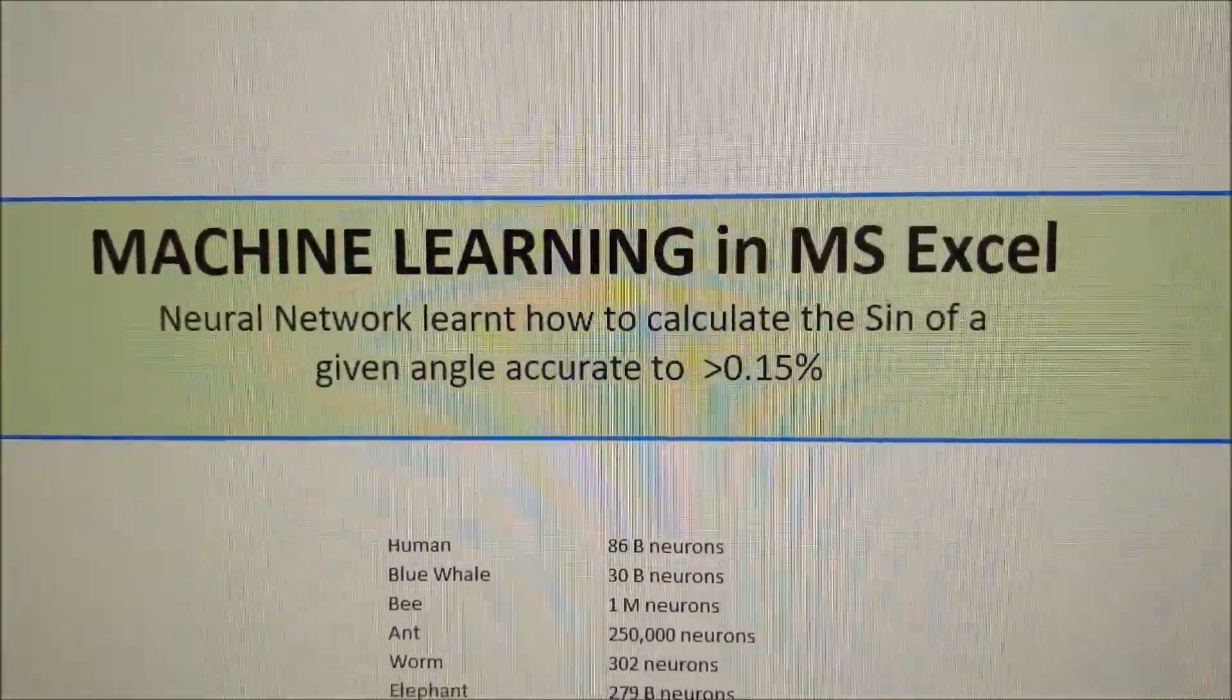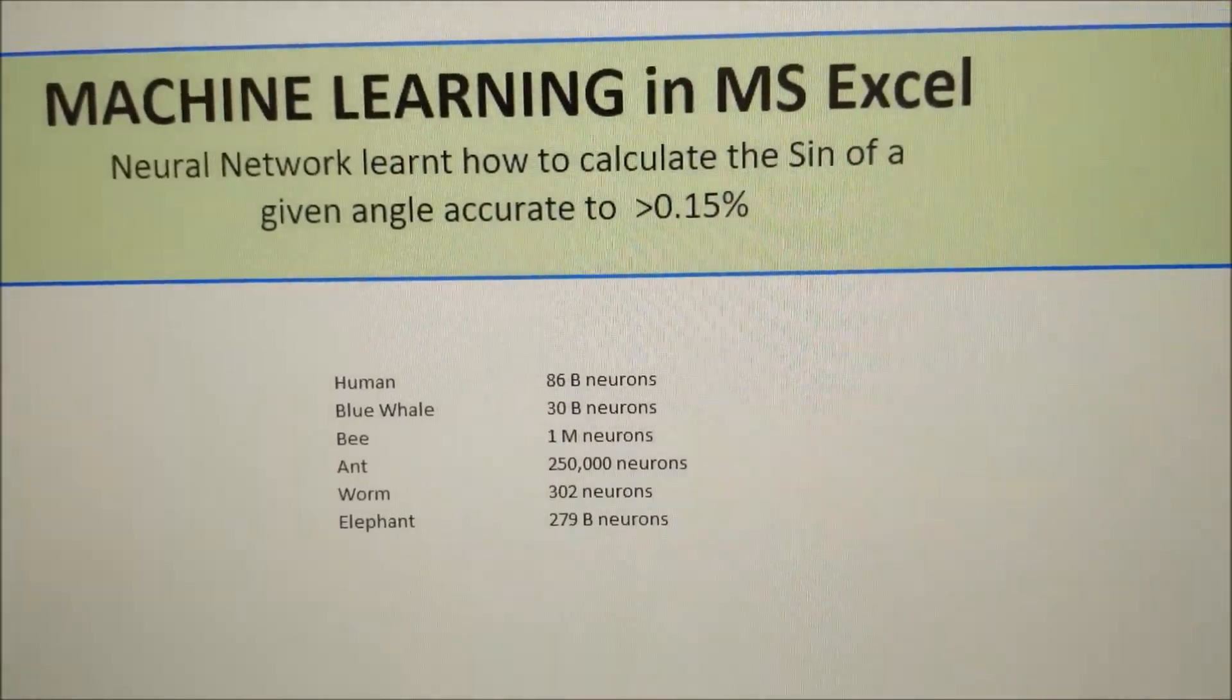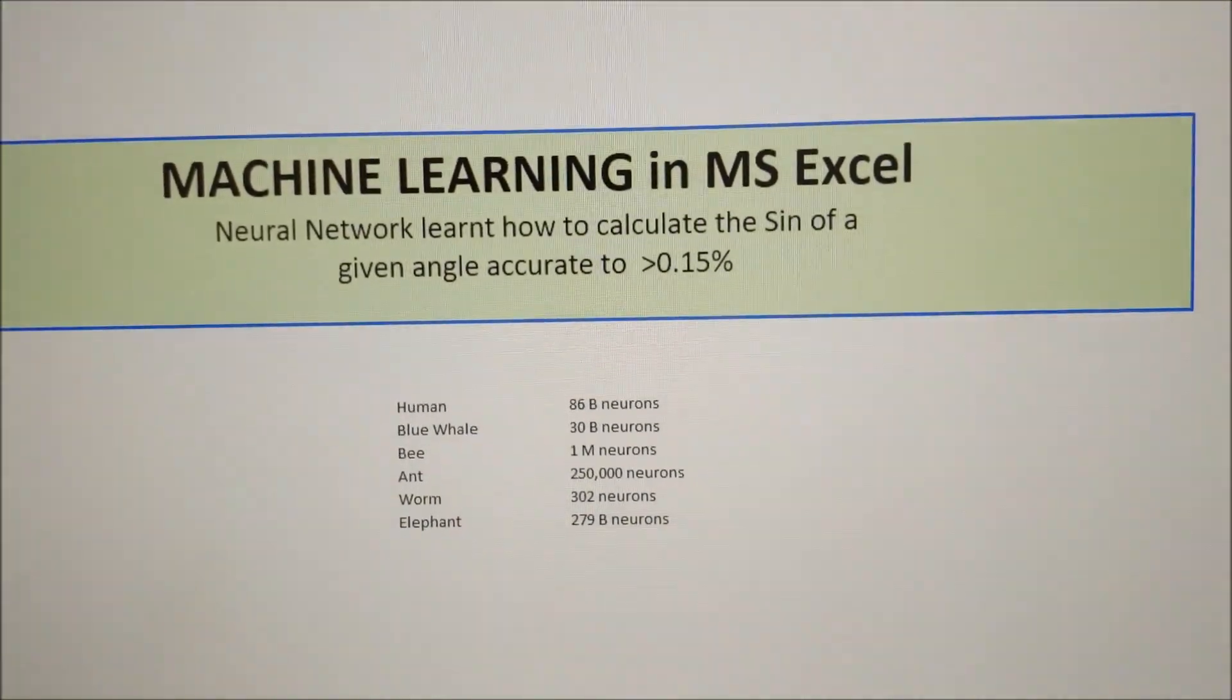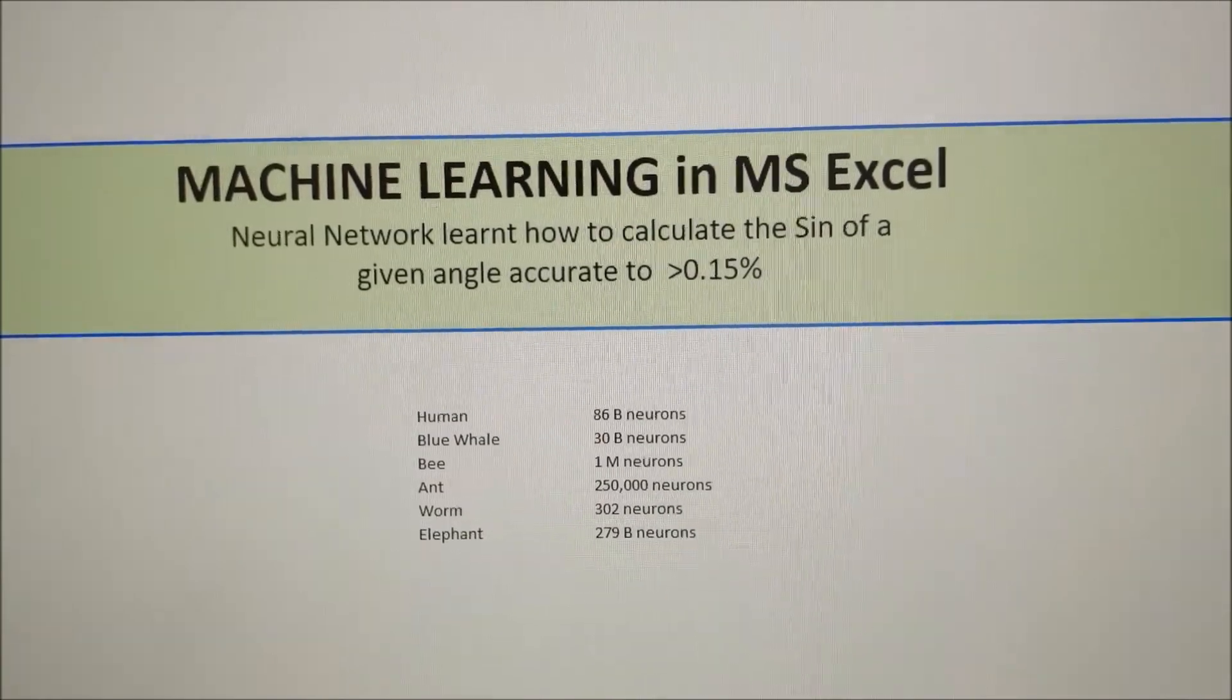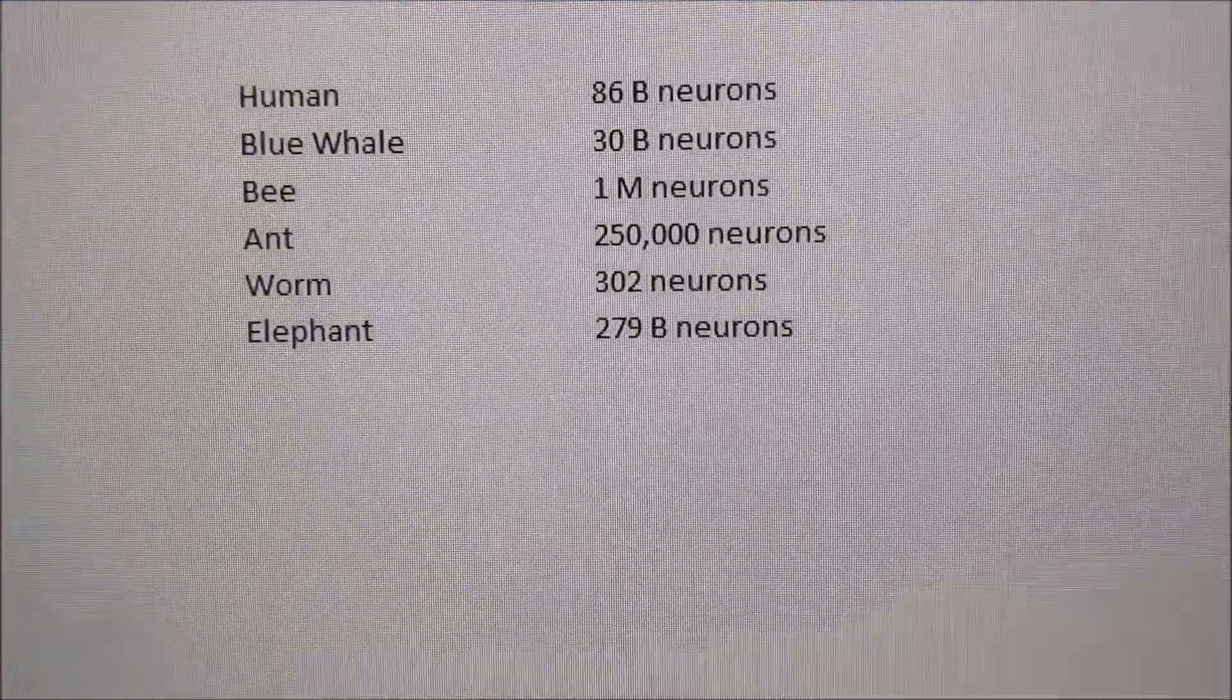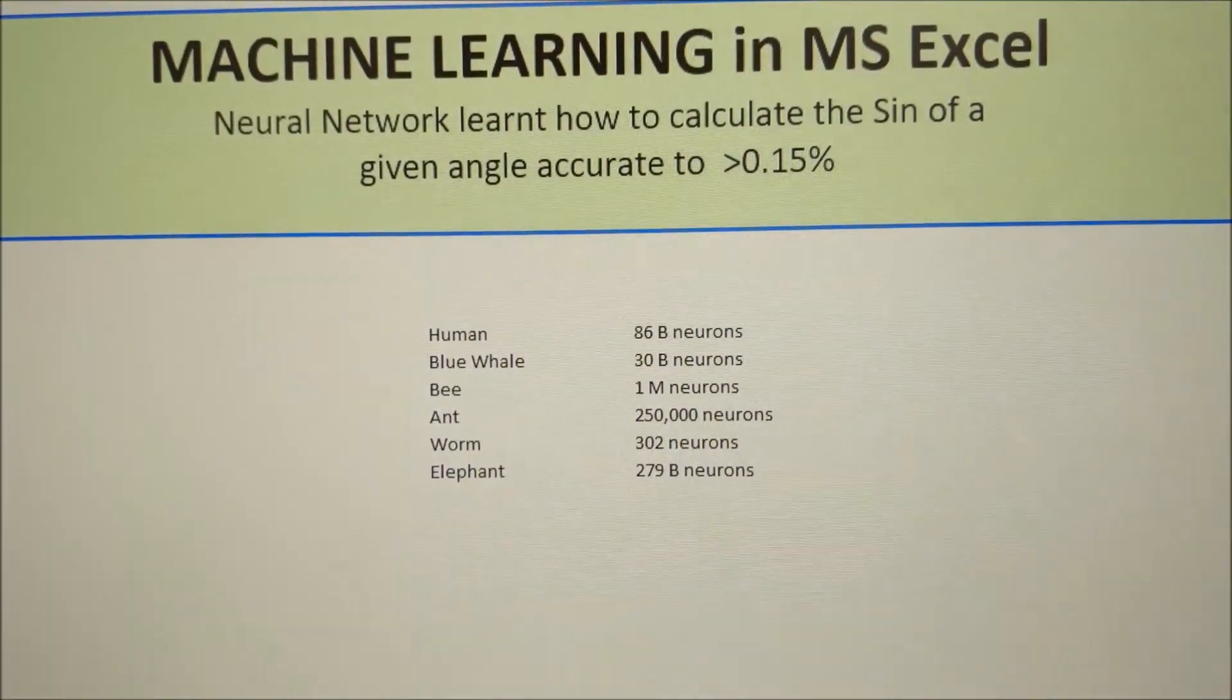But before we start, I'd just like to say that humans have 86 billion neurons, blue whale about 30 billion, a bee one million, an ant 250,000 neurons, a worm 302, and what we're talking about here in this little spreadsheet is just two neurons. But before we get all high and mighty thinking about how many billion neurons a human brain has, I'd just like you to look at that last item on the list. An elephant has got three times as many neurons as we have. I think that's a salutary point.